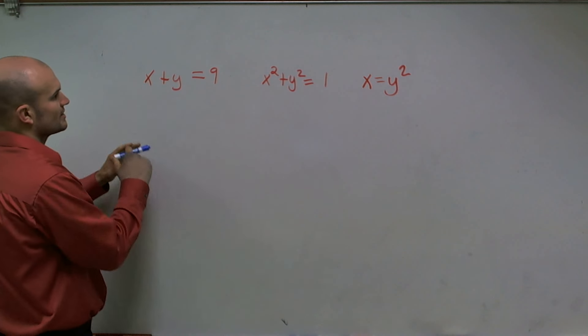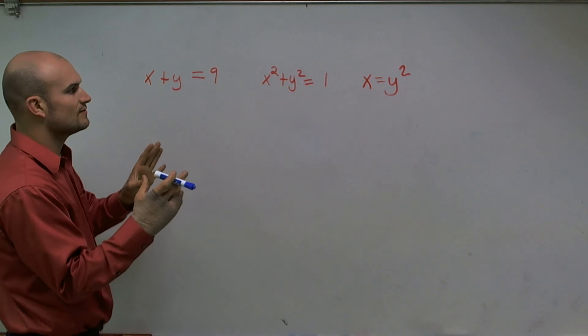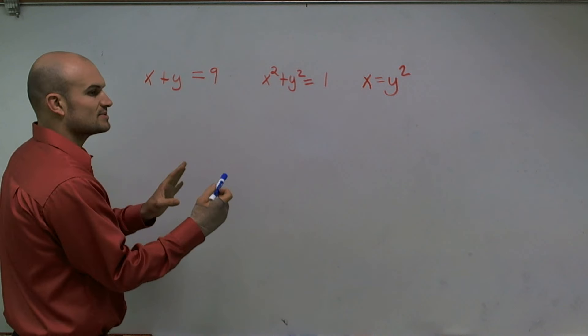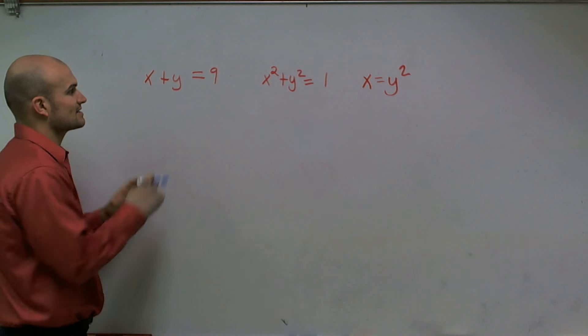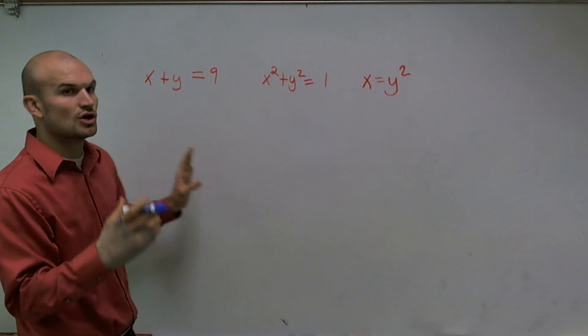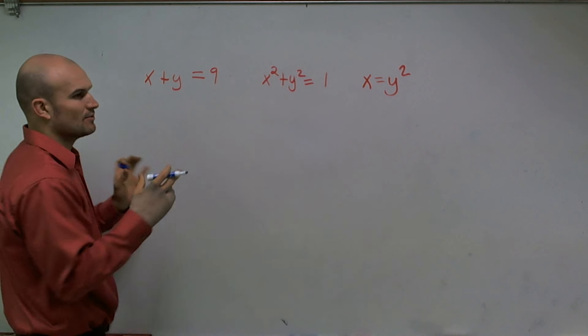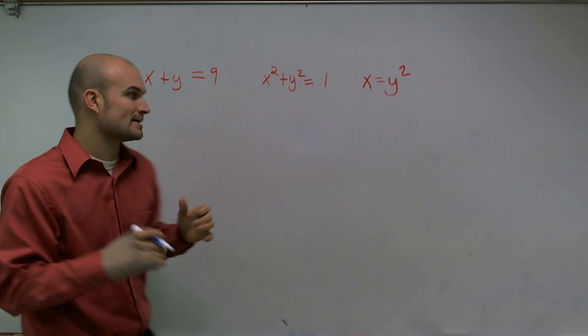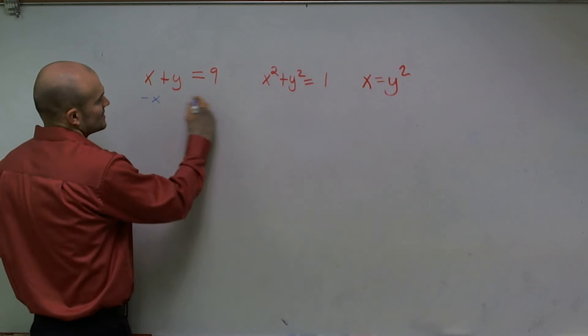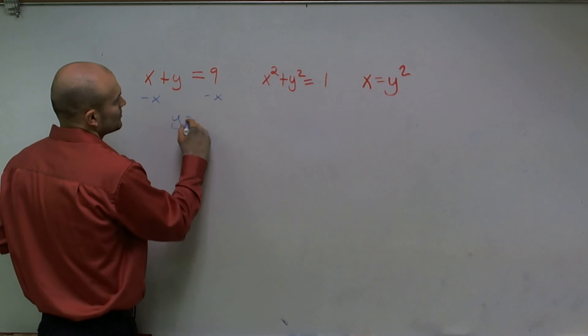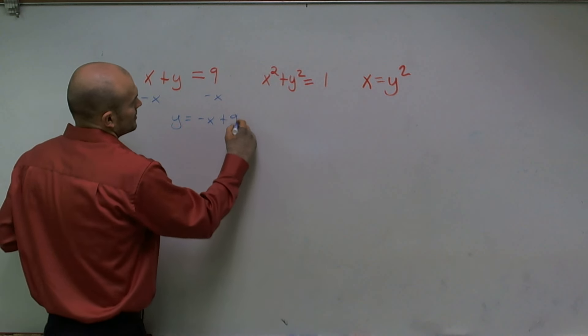If we're going to look at this as a function in terms of Y in terms of X, we need to solve for Y. For each one of these, I want to isolate my Y to get it all by itself. So I'll subtract an X here and I get Y equals negative X plus nine.